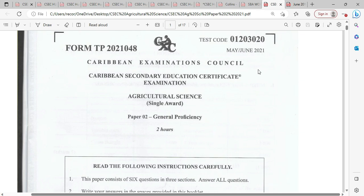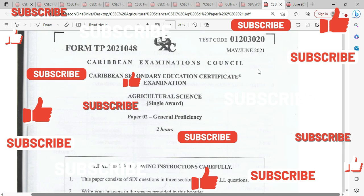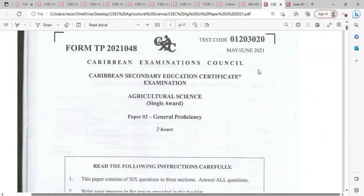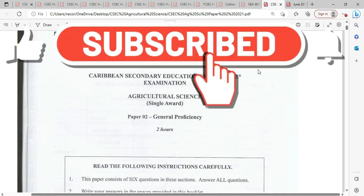Welcome to Wilson from VTCP Academy. Today we're going to be looking at the May June 2021 paper for Agriculture Single Award. We're going to be looking particularly at question number two.